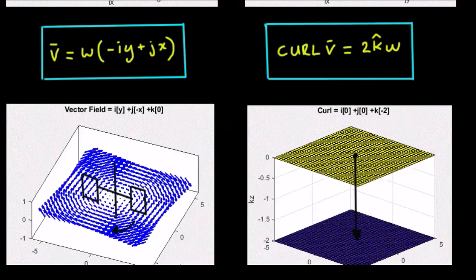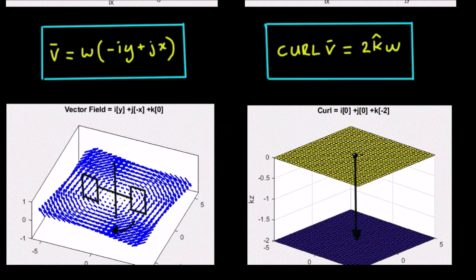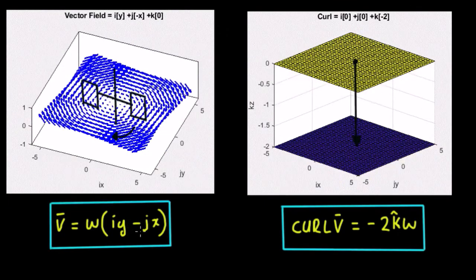Now if we change that vector field slightly - the vector field is going to be equal to plus y in the i direction, minus j, and k equals zero. The field would be rotating in a clockwise direction, which means the paddle would be rotating clockwise. By the right-hand rule, the curl vector would be in the k direction with a value of minus two. That's exactly what we see here - a value of minus two.